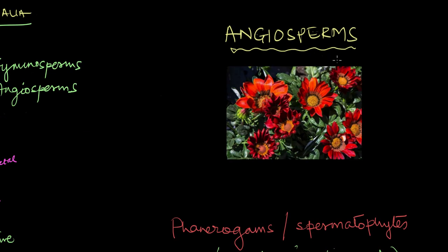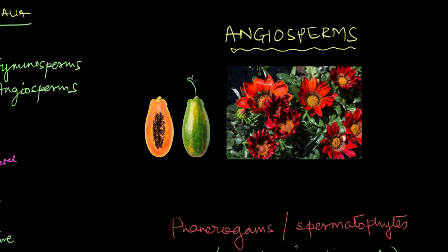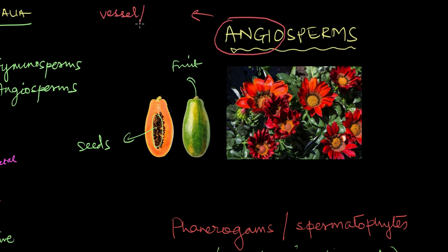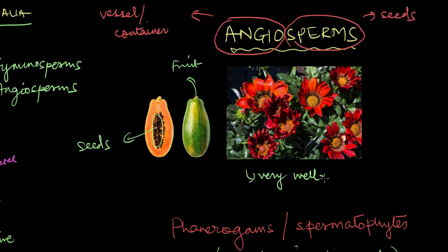Finally, we have the angiosperms, the most complex and advanced plants of the kingdom. Angiosperms are flowering plants that produce seeds enclosed within fruits. The fruit provides protection to the seeds and also helps in their dispersal. So unlike the gymnosperms, angiosperms have covered seeds — angio meaning a container or vessel and sperm meaning seed. Angiosperms also have very well differentiated bodies and complex vascular tissues.